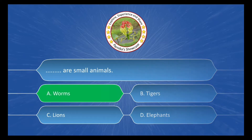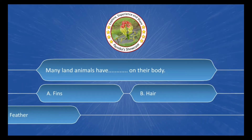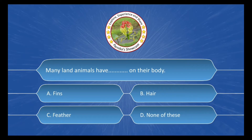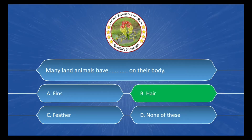Next question is: many land animals have ___ on their body, and the options are: A. Fins, B. Hairs, C. Feathers, D. None of this. And the correct answer is option B. Hairs.